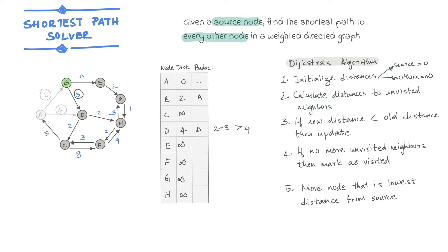In the case of E, the distance from source via B is 2 plus 4, which is lower than infinity. So we can update the distance and the predecessor node for E. Now that all the neighbors have been considered, we can mark B as visited.